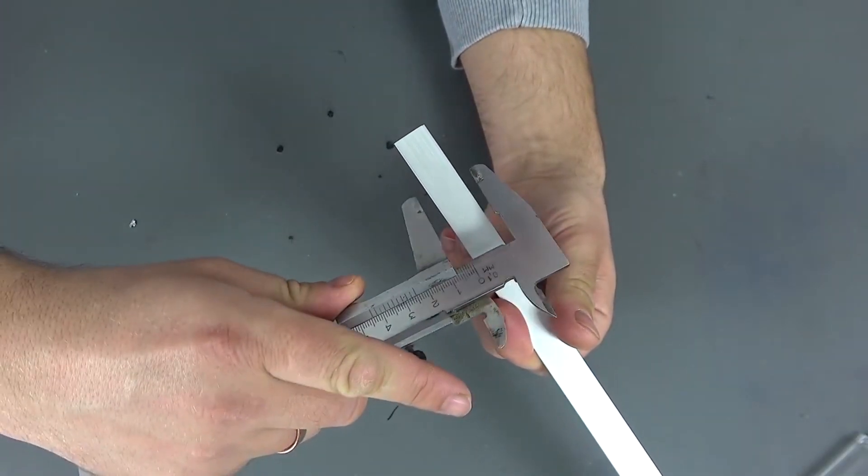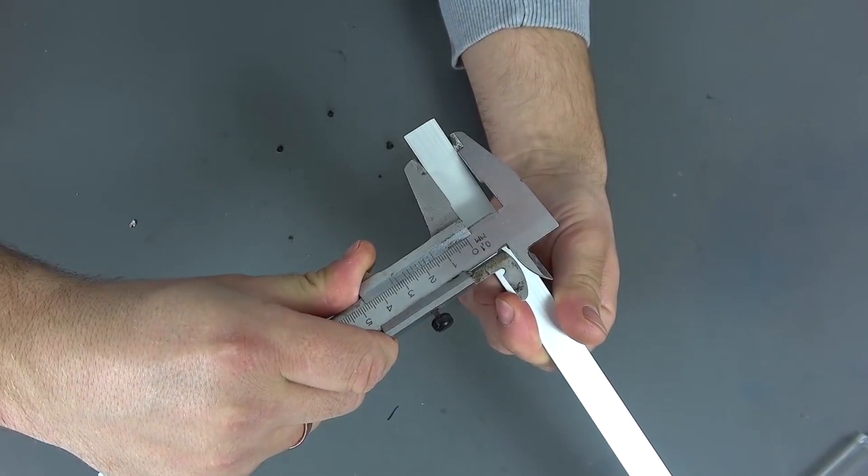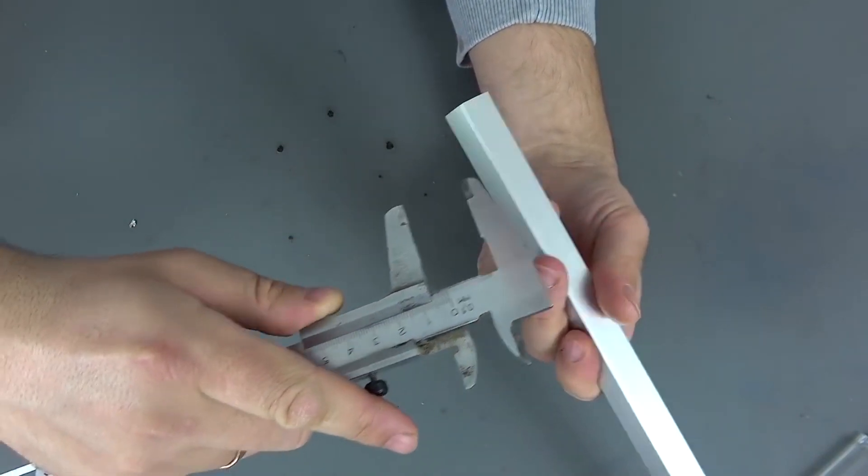And in order not to waste time, I will tell you what we will need to make it. I will need an aluminum profile of 15 by 15 mm and a metal thickness of 2 to 4 mm.